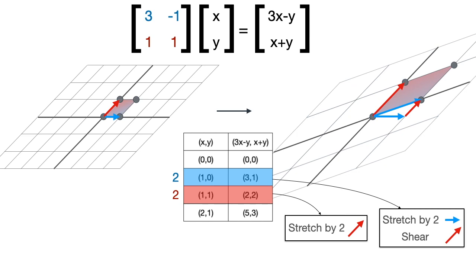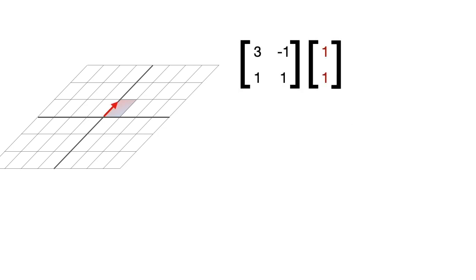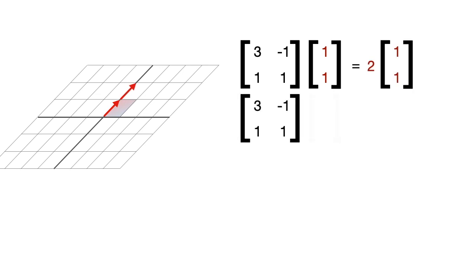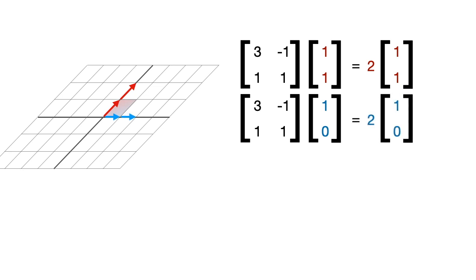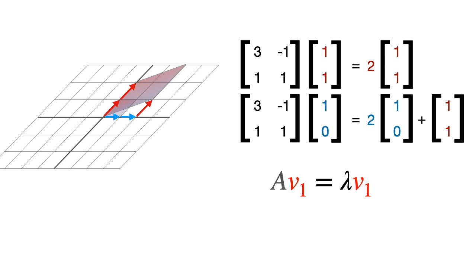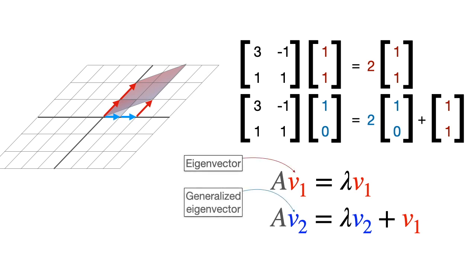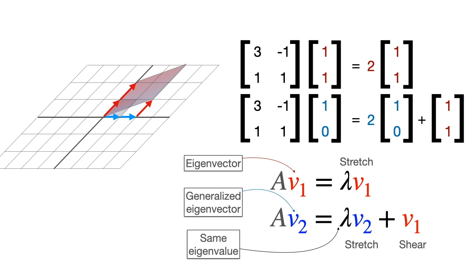Mathematically: when we multiply the matrix by the red eigenvector we get twice that eigenvector (Av1 = lambda·v1). When we multiply the matrix by the blue generalized eigenvector we get twice itself plus the first eigenvector (Av2 = lambda·v2 + v1). So v1 is the eigenvector, v2 is the generalized eigenvector — they both correspond to a stretch by lambda, and v2 also corresponds to a shear in the direction of v1. Notice one special thing: they both have the same eigenvalue, and this is always the case — the generalized eigenvector always has the same eigenvalue as its corresponding eigenvector.